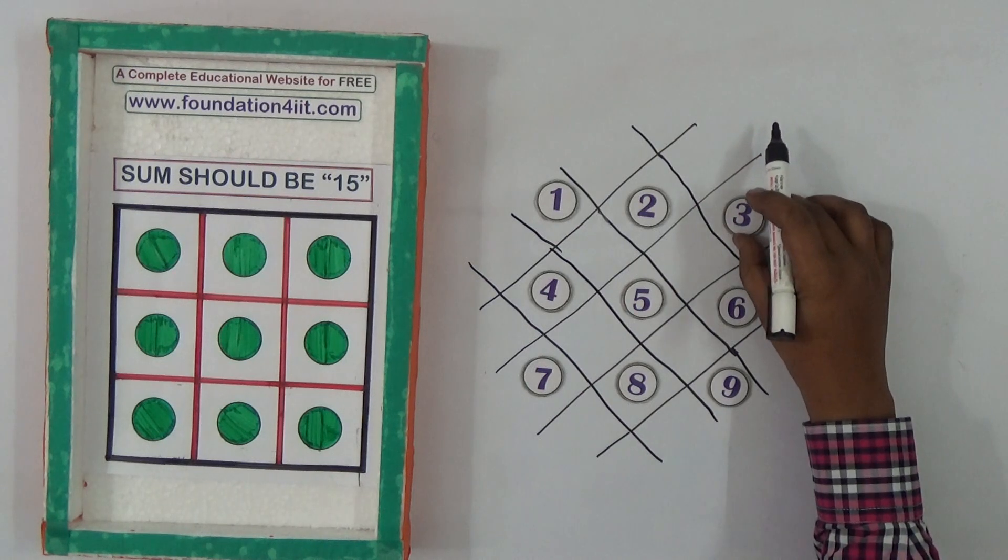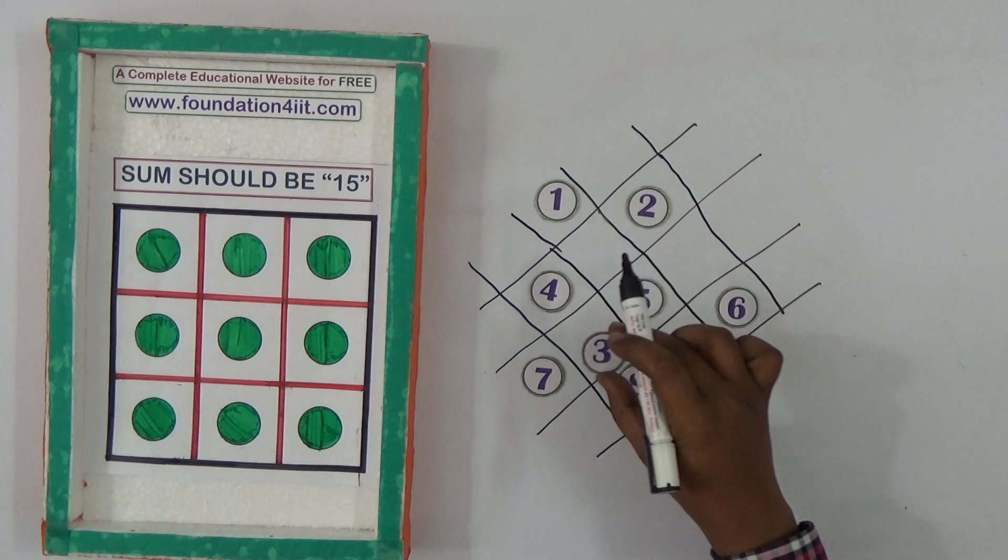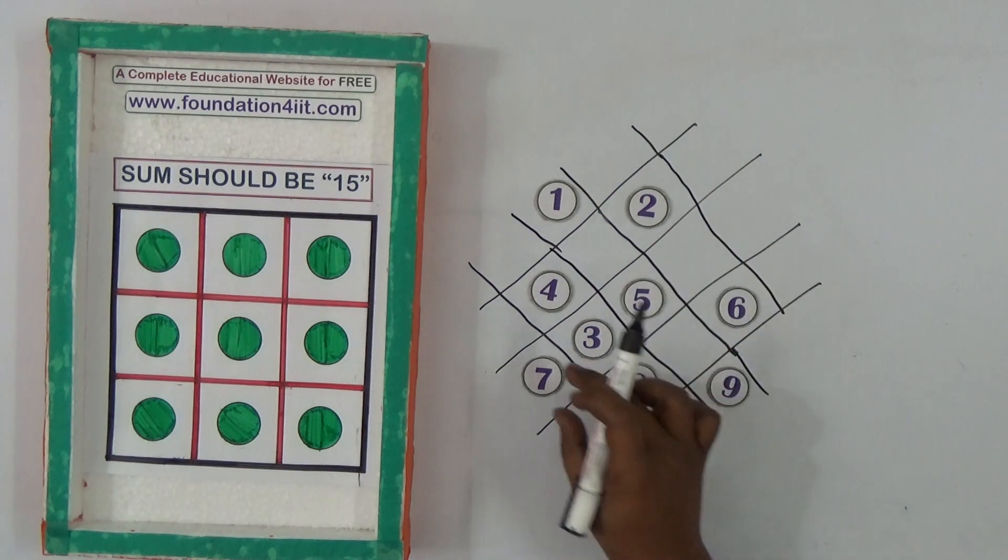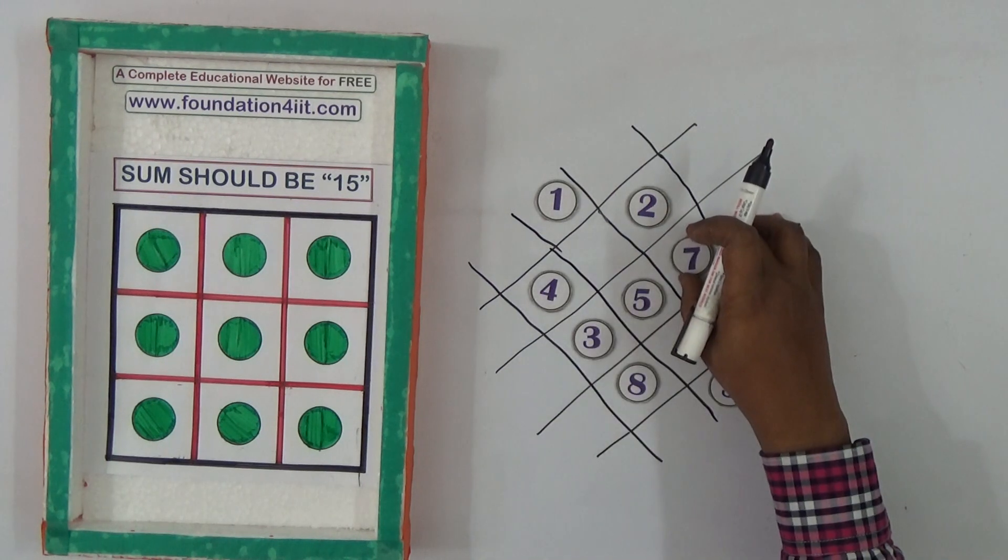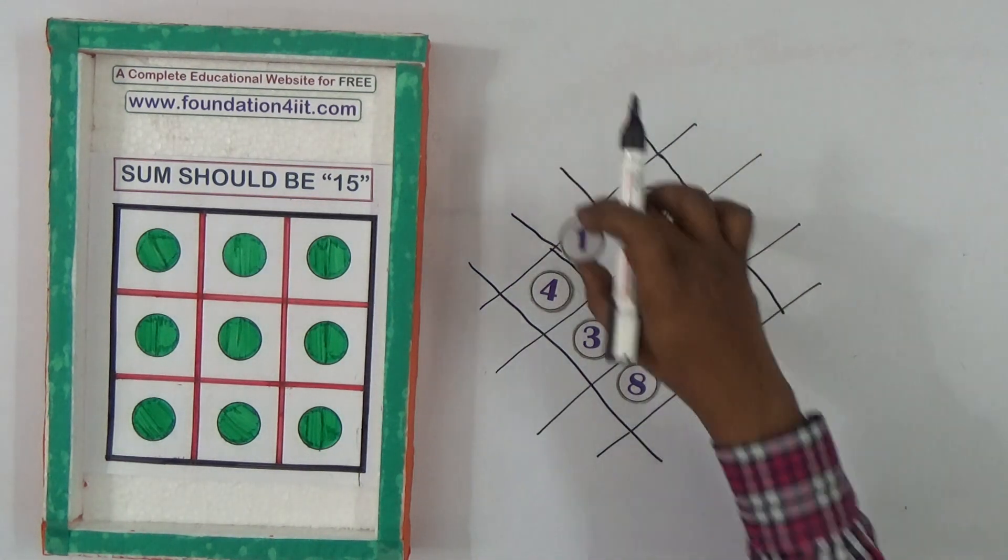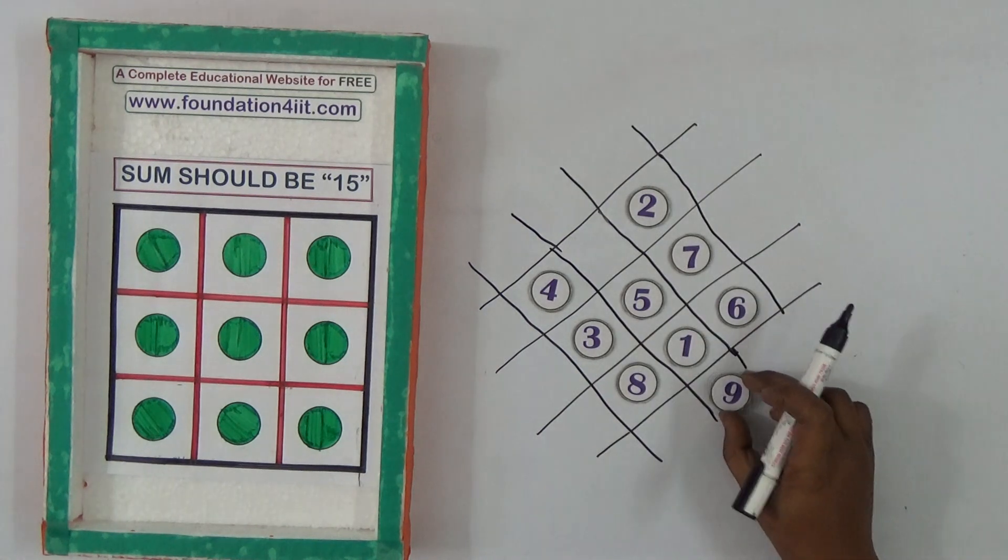This 3 you can take out and keep opposite side. This is 3, I kept this side. This 7 should be another side, interchange. Now this 1 keep in this side and this 9 keep other side.